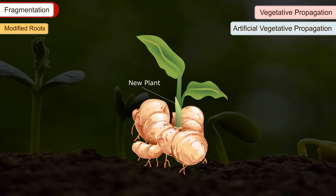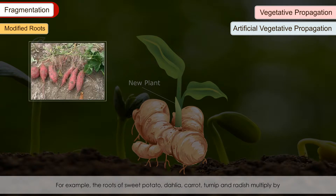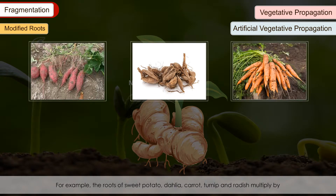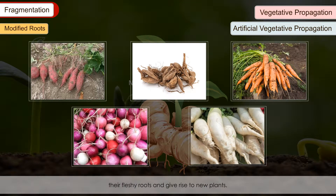Modified Roots: Some roots modify to undergo vegetative propagation in addition to their normal functions. For example, the roots of sweet potato, dahlia, carrot, turnip and radish multiply by their fleshy roots and give rise to new plants.